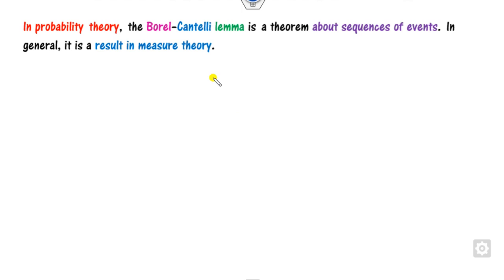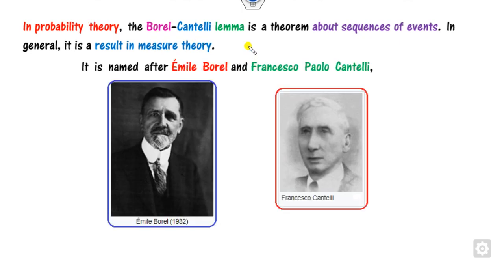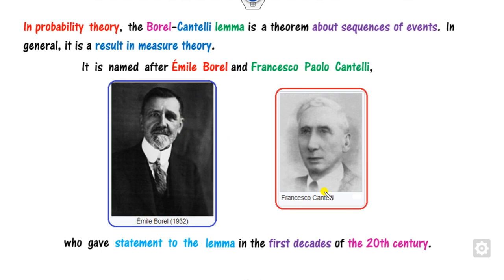The Borel-Cantelli law is part of probability theory related to sequences of events, and in general it is a result of measure theory. This lemma came into the picture due to two statisticians: Émile Borel and Francesco Cantelli, who gave these results in the first decade of the 20th century.